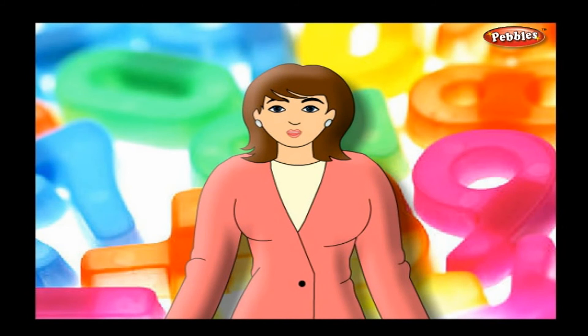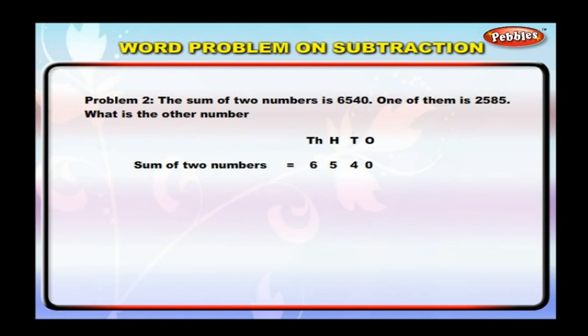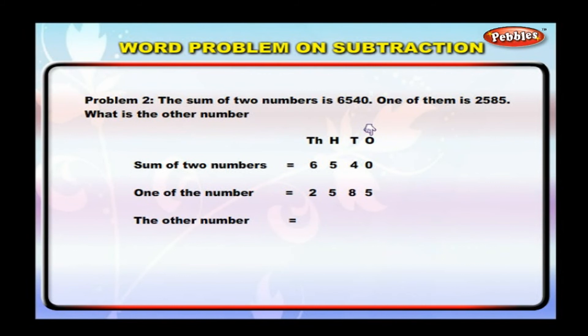Problem two: the sum of two numbers is six thousand five hundred and forty. One of them is two thousand five hundred and eighty-five. What is the other number? The other number equals six thousand five hundred and forty minus two thousand five hundred and eighty-five. Subtract ones: you cannot subtract five from zero, so borrow one from the tens column. Ten minus five is equal to five. Write five below the ones column.